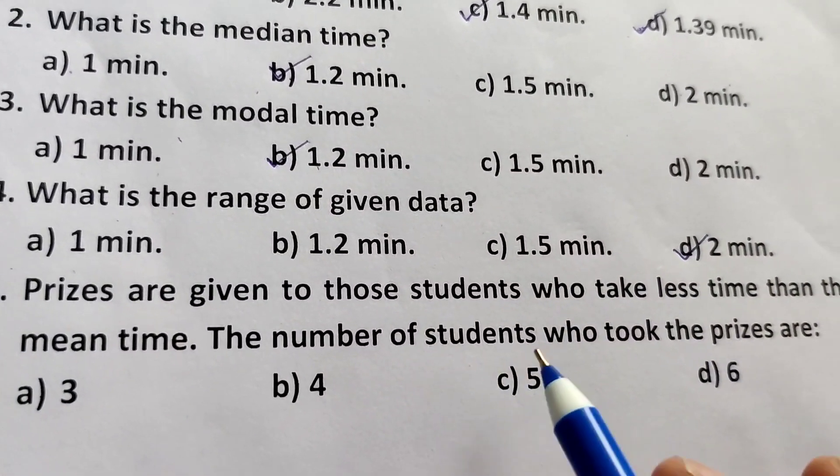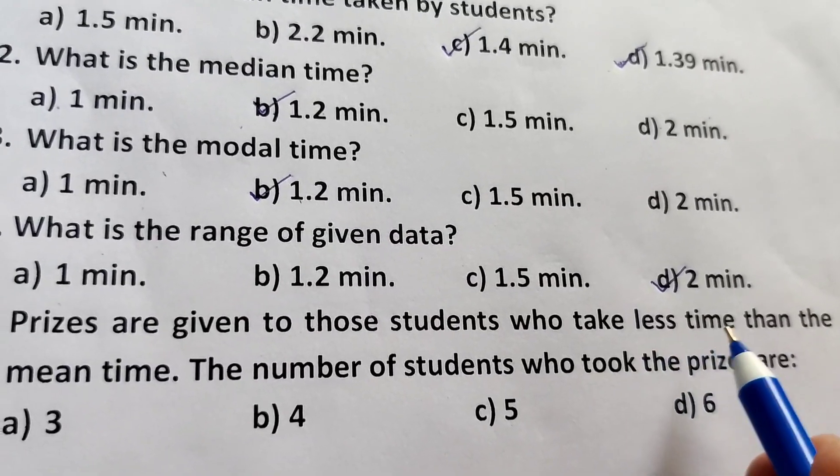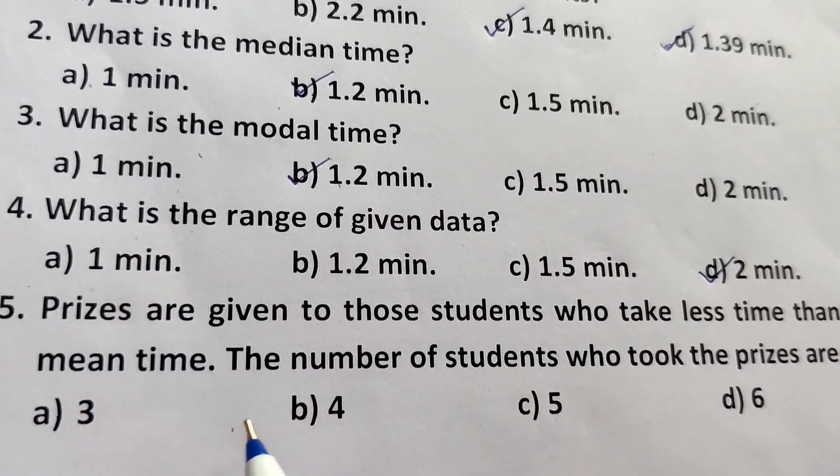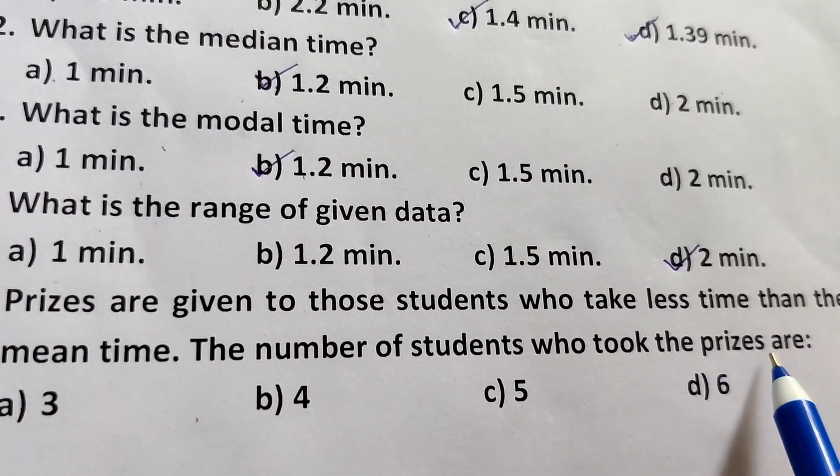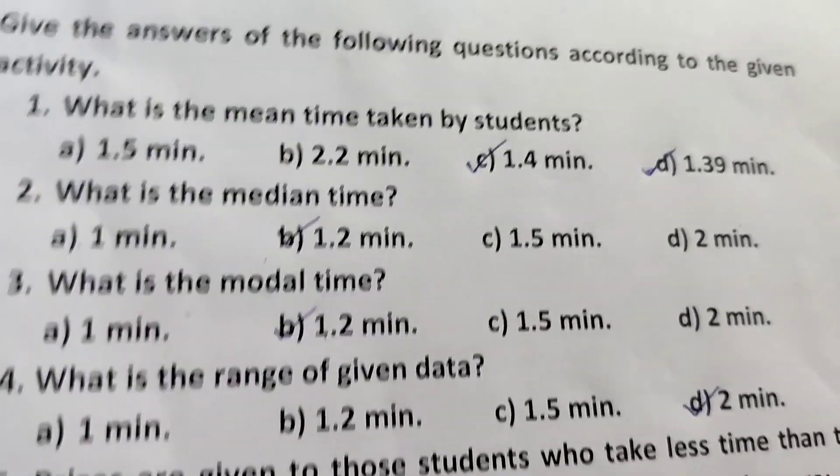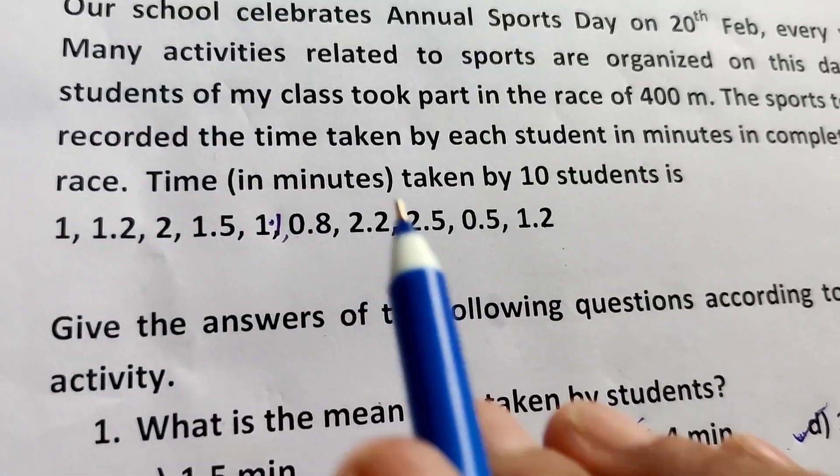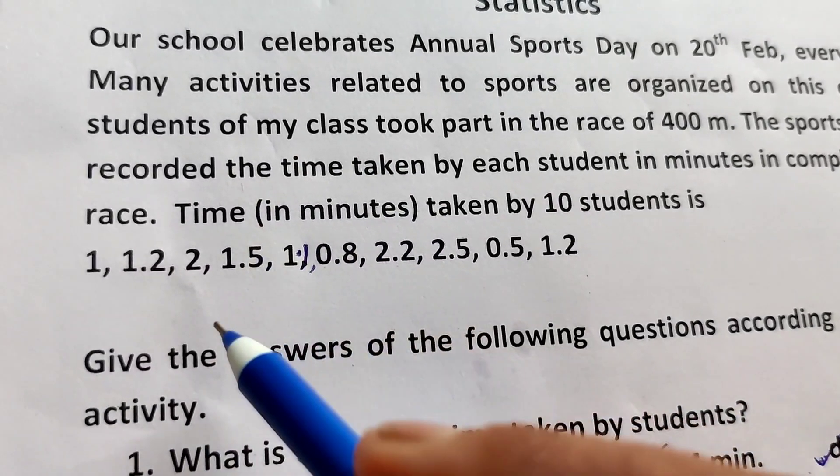Next, prizes are given to those students who take less time than the mean time. The number of students who took the prizes are... mean time is 1.4. So how many students are taking less than 1.4 minutes?